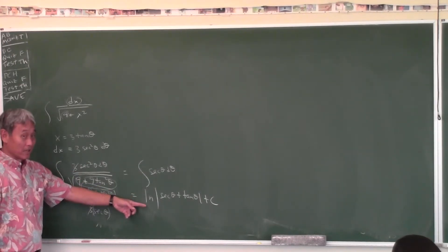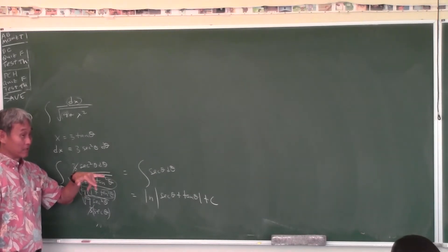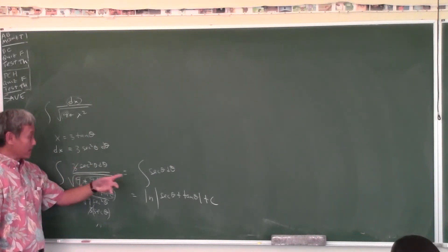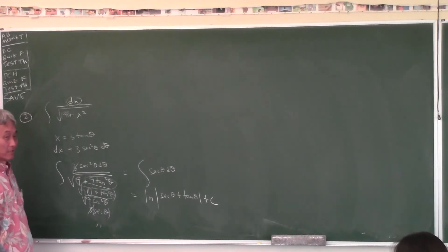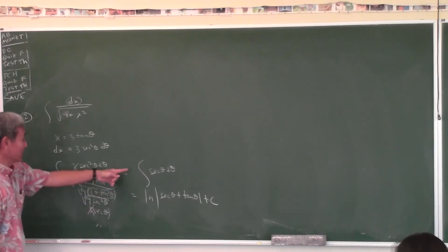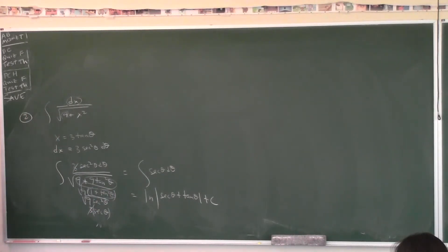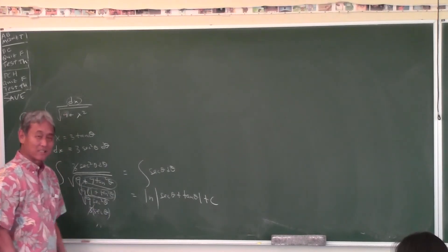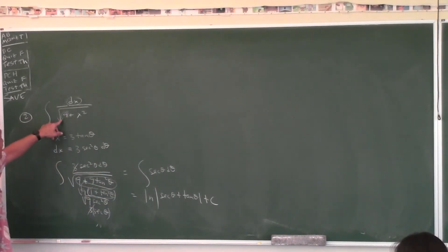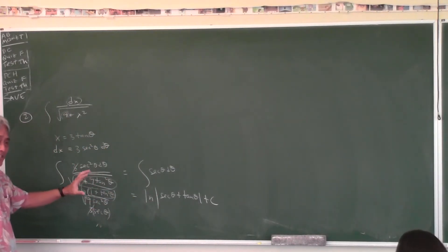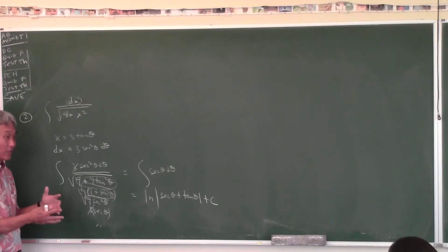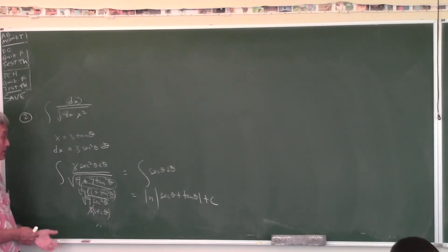So the answer is ln|(√(9 plus X²) plus X) / 3| plus C. But looking at the answer in the back of the book, the 3 disappears because ln(a/b) equals ln(a) minus ln(b), and natural log 3 is a constant — it gets absorbed into the plus C.